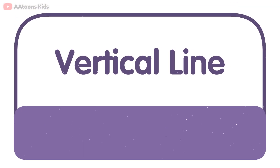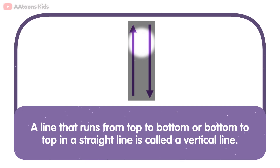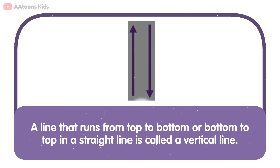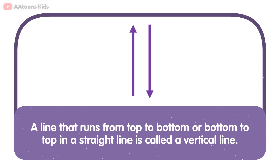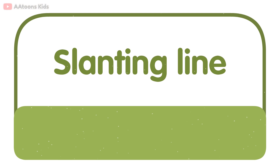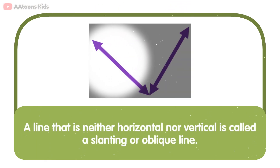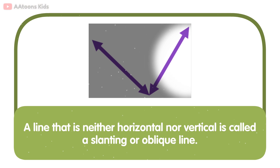A line that runs from top to bottom or bottom to top in a straight line is called a vertical line. A line that is neither horizontal nor vertical is called a slanting line.